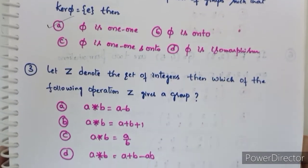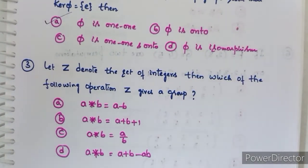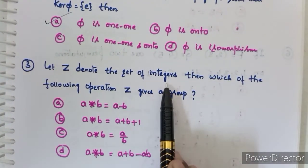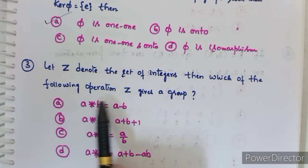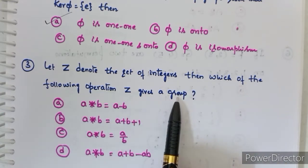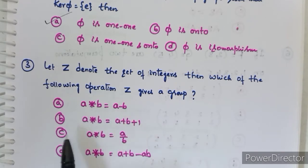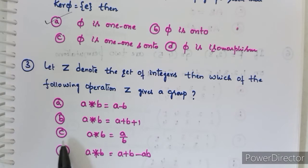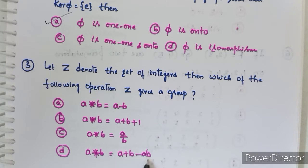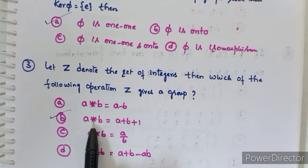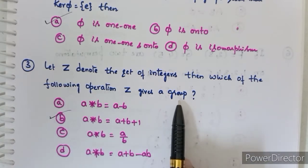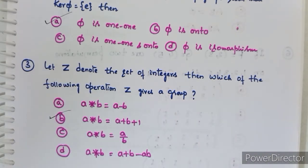Third question: let Z denote the set of integers. Which of the following binary operations on Z gives a group? Option A: a★b = a − b. Option B: a★b = a + b + 1. Option C: a★b = a/b. Option D: a★b = a + b − ab. Option B is correct. Using this binary operation we can prove the set of integers forms a group.